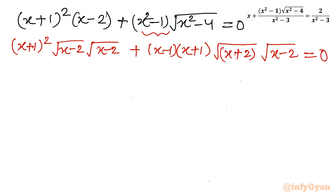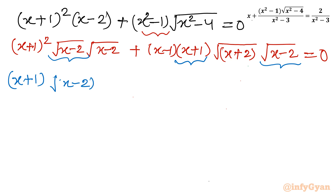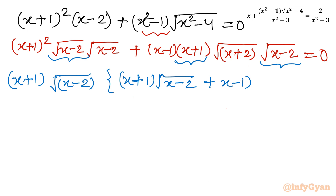Now I check what is common and take it out. (x+1) appears three times and √(x-2) is also common. Taking (x+1)·√(x-2) as the common factor, what remains in the bracket from the first term is (x+1)·√(x-2), and from the second term, (x-1)·√(x+2). So the equation becomes: (x+1)·√(x-2) · [(x+1)·√(x-2) + (x-1)·√(x+2)] = 0.